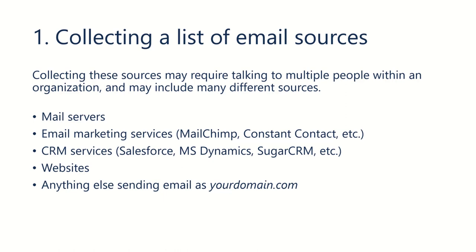The first thing you want to do is collect a list of email sources. The list of email sources will include things like Office 365, because that's where your email is hosted, but it may also include things like email marketing services. So if you're using things like MailChimp or Constant Contact, we would need to collect information about where those emails are being sent or how those emails are being sent.